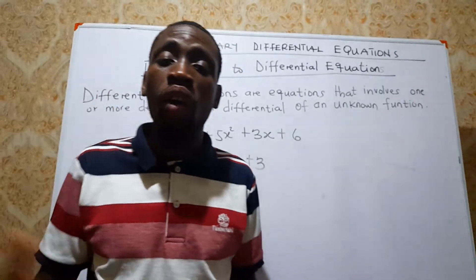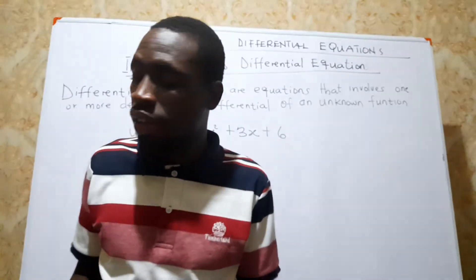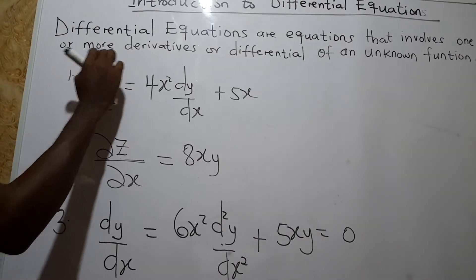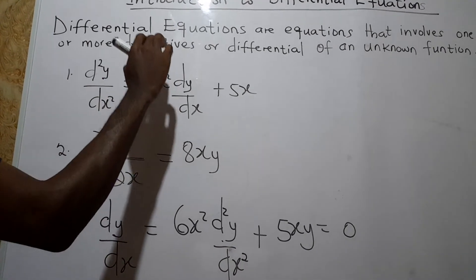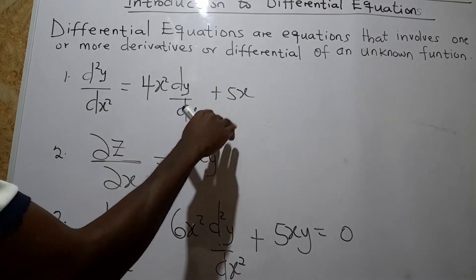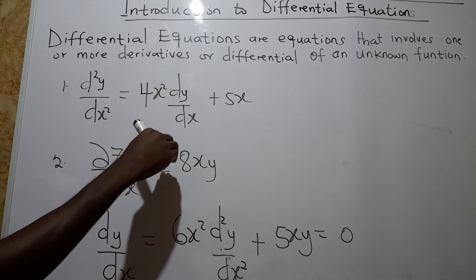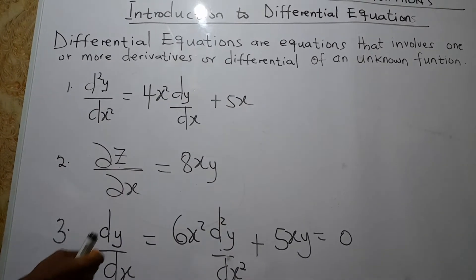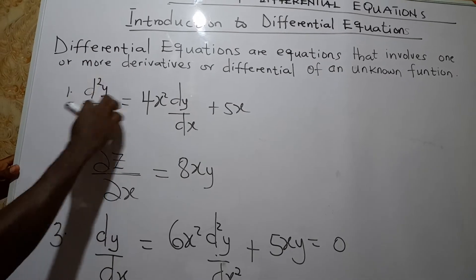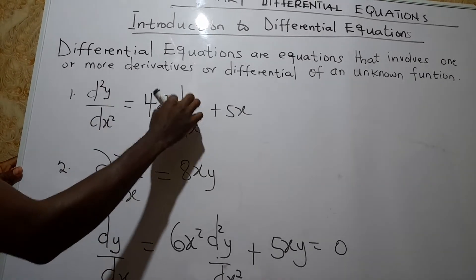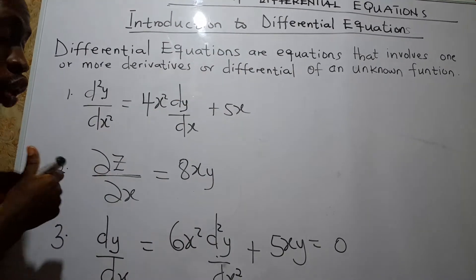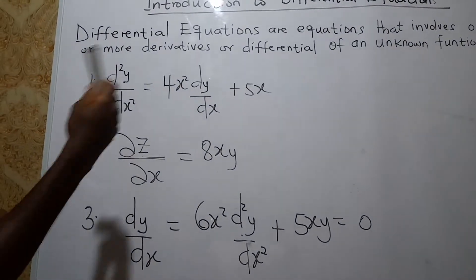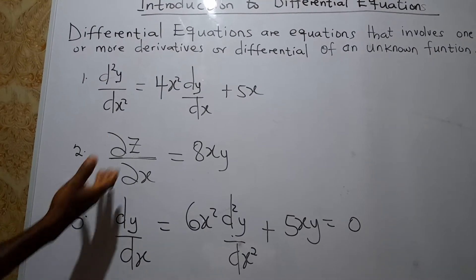Let me give you some more examples of differential equations. On the board we have: d²y/ds² = 4s² · dy/ds + 5s. We do not know the function whose differential equation this is. As far as this equation contains a second derivative and a first derivative of a function which we do not know, then the equation is called a differential equation.